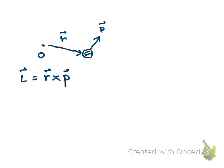We can write down the magnitude of the angular momentum, which is equal to R times P times sine theta, where theta is the angle between vector R and vector P. The direction follows the right-hand rule: if vector R points along your fingers and vector P points out from your palm, the direction of the angular momentum is along your thumb.